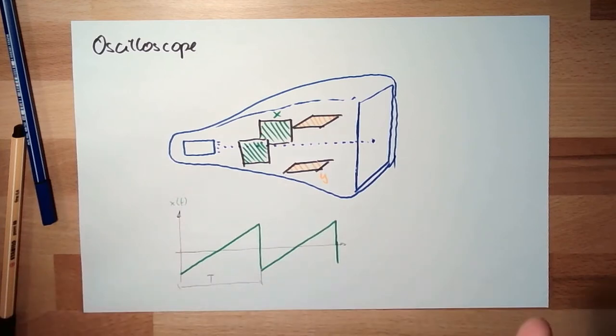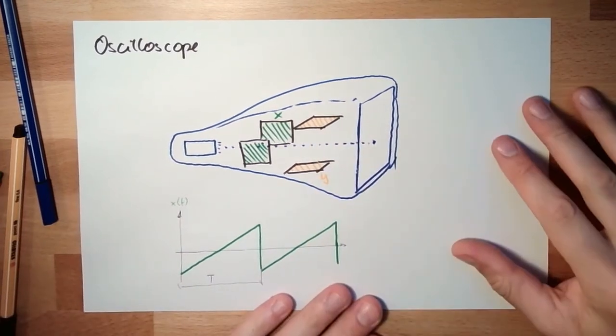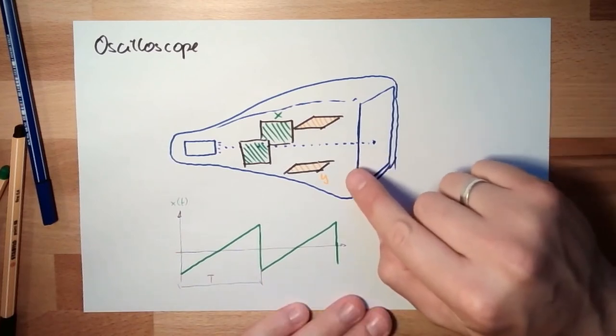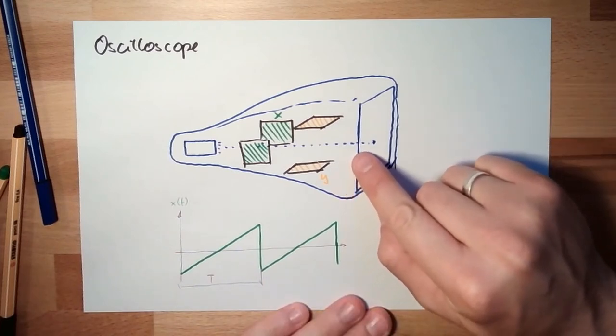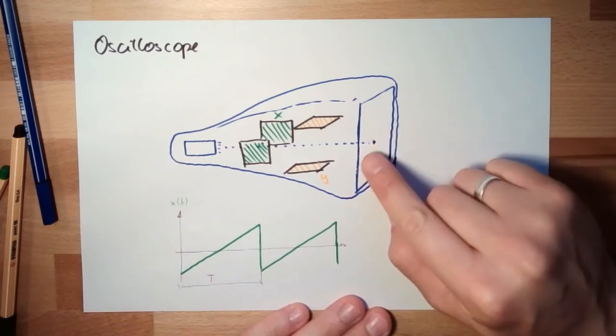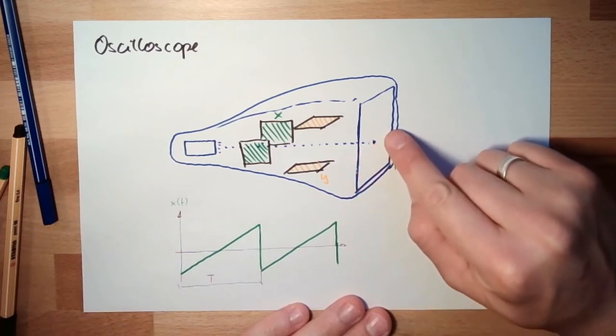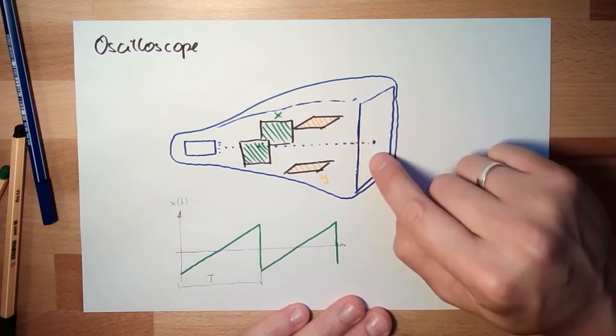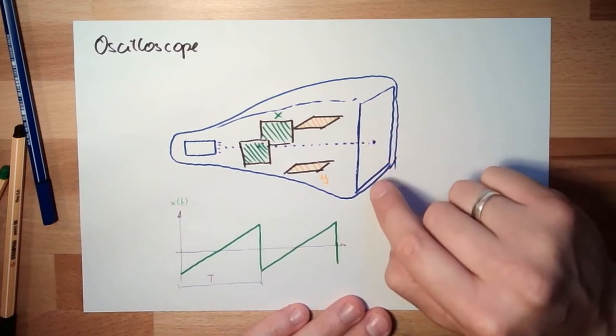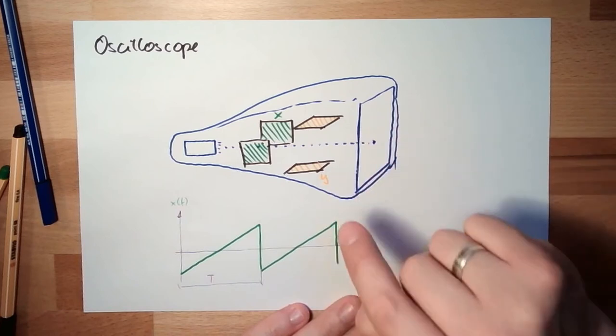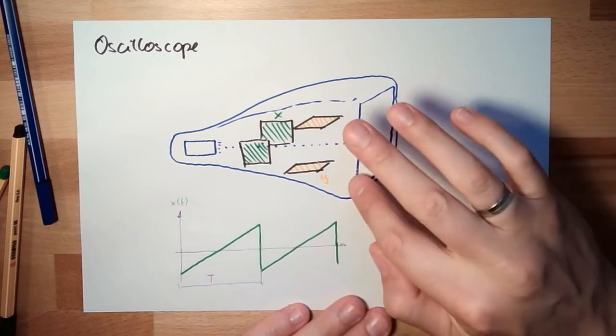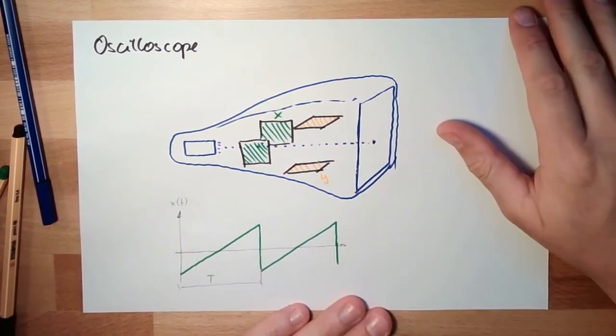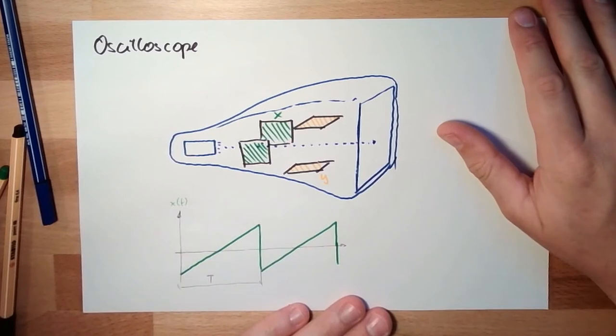And on y, I just put the voltage I want to measure. And suddenly, during our travel of our point across the x-axis, the y-axis is moving up and down. And suddenly, I see some sort of wave. And then I can see exactly how this figure looks like.